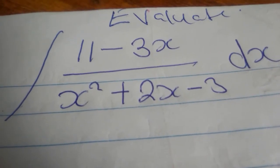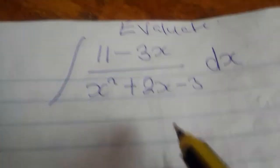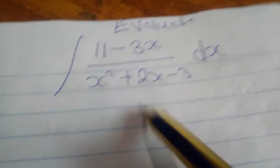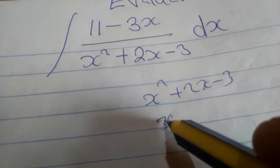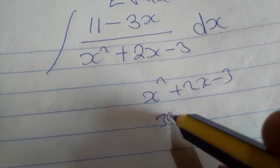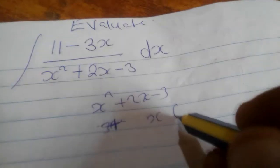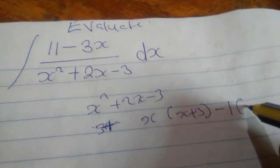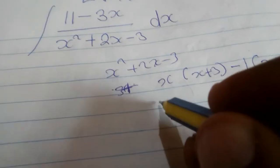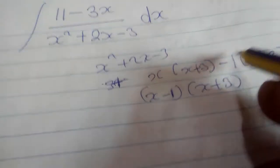So evaluate this one. For this one we are going to factorize the denominator. So x squared plus 2x minus 3, which is the same as x in the bracket x plus 3, minus 1 in the bracket x plus 3. So we are going to get x minus 1 times x plus 3.